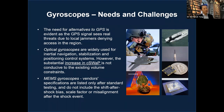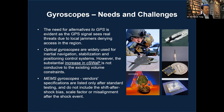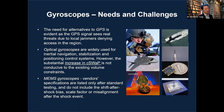The need for alternatives to GPS is evident because GPS signals face real threats from local jammers denying access in a region — soldiers can lose their position. Gyroscopes and equivalent sensors are very important here. Optical gyroscopes are widely used for inertial navigation, stabilization, and positioning control, but the substantial increase in SWaP is not conducive to existing volume constraints. MEMS gyroscopes can be made very small and their performance is approaching that of optical gyroscopes, however vendor specifications are listed only after standard testing and do not include bias, scale factor, or misalignment shifts after a shock event.